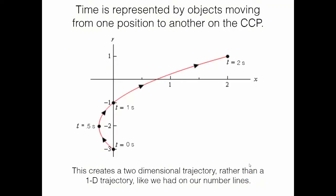If we wanted to include time in our analysis, we would show objects moving and draw a trajectory in two dimensions. Like a parametric curve for those familiar with pre-calculus or calculus, this would be your trajectory. As time goes on, the object moves to a different ordered pair or coordinate in this plane.